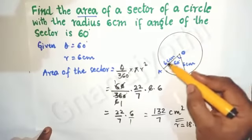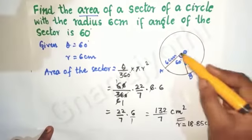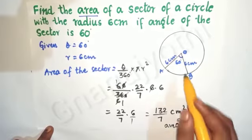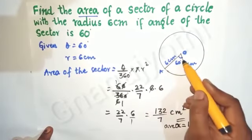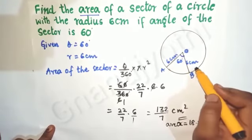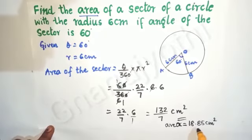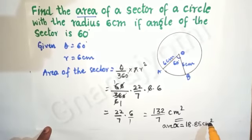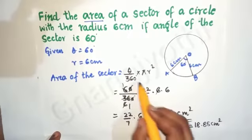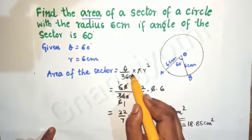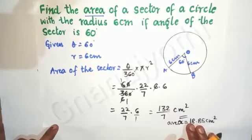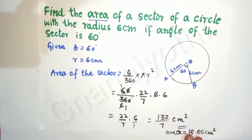Therefore, the area of the sector with angle 60 degrees and radius 6 centimeters is equal to 18.85 square centimeters. We should remember the area of sector formula: (theta / 360°) × πr², and use it to find the area.